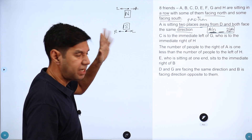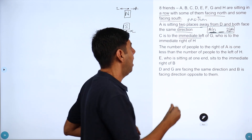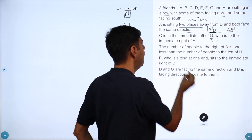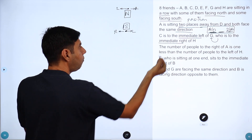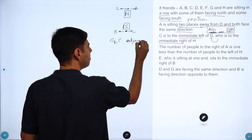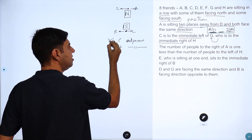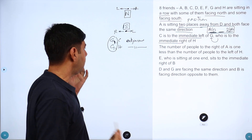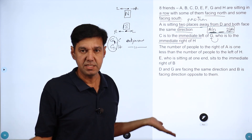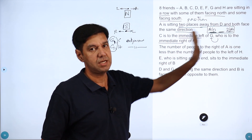C is to the immediate left — 'immediate' is a very specific clue — but we don't know which direction C or G is facing. Then H is to the immediate right of G. So G and C are adjacent, and G and H are adjacent. G is common to both, which means C and H are on either side of G. There are only two adjacent places for one person, and we have two different people, so that's a block.